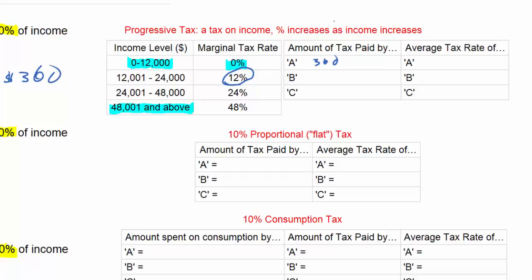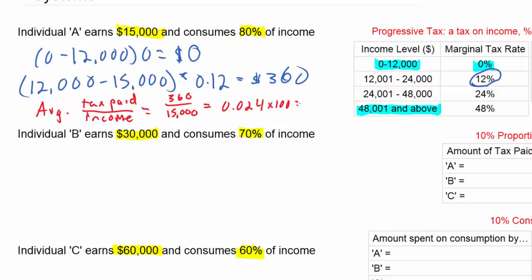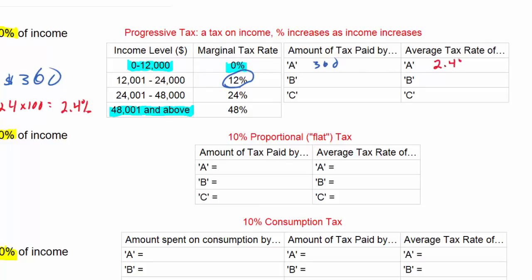$360 is the amount of tax paid on Individual A's $3,000 of taxable income. To determine the average tax rate, we take the $360 and divide it by the total income of $15,000. The average tax rate equals tax paid divided by income — in this case $360 divided by $15,000 — which gives an average tax rate of 0.024, or 2.4%. Only the income earned above the lowest tax bracket can be taxed, so 12% of the $3,000 of taxable income provides this individual with a tax burden of just 2.4%.